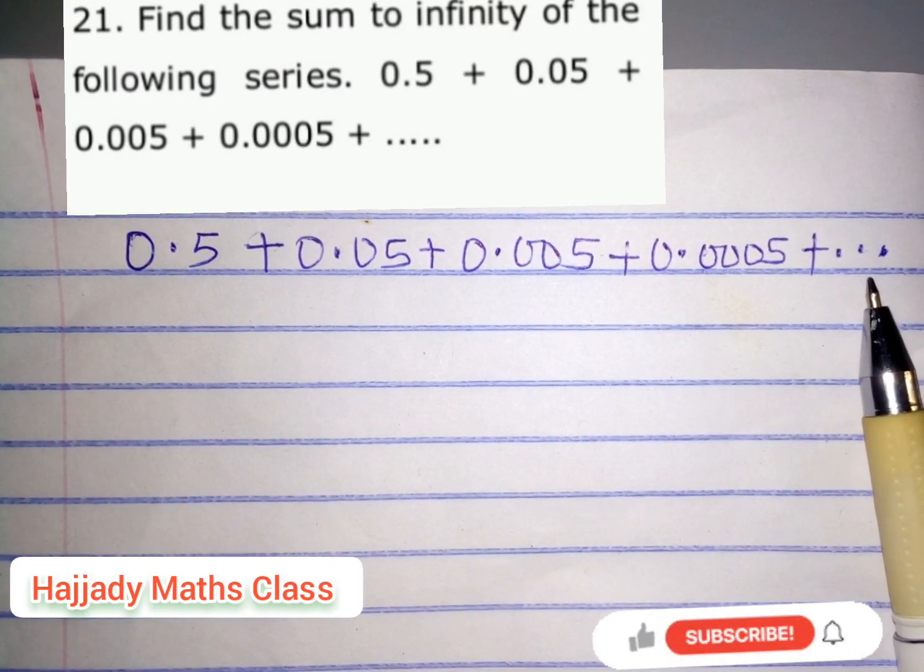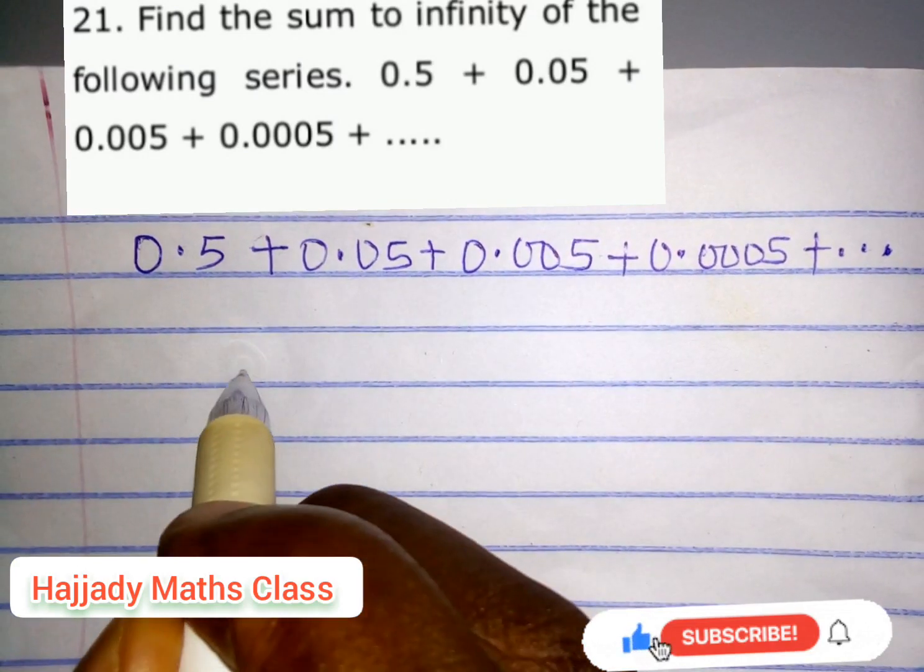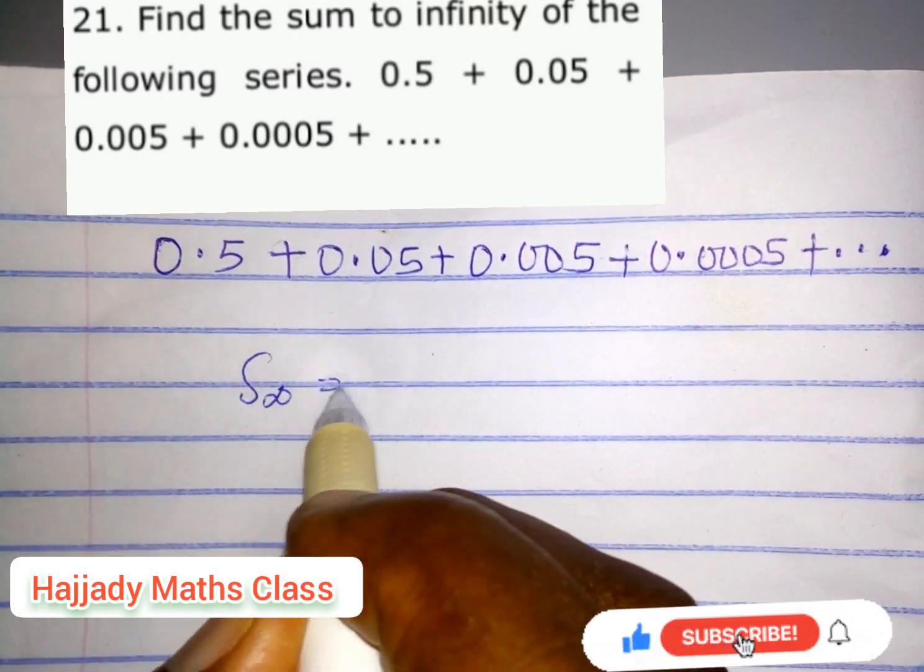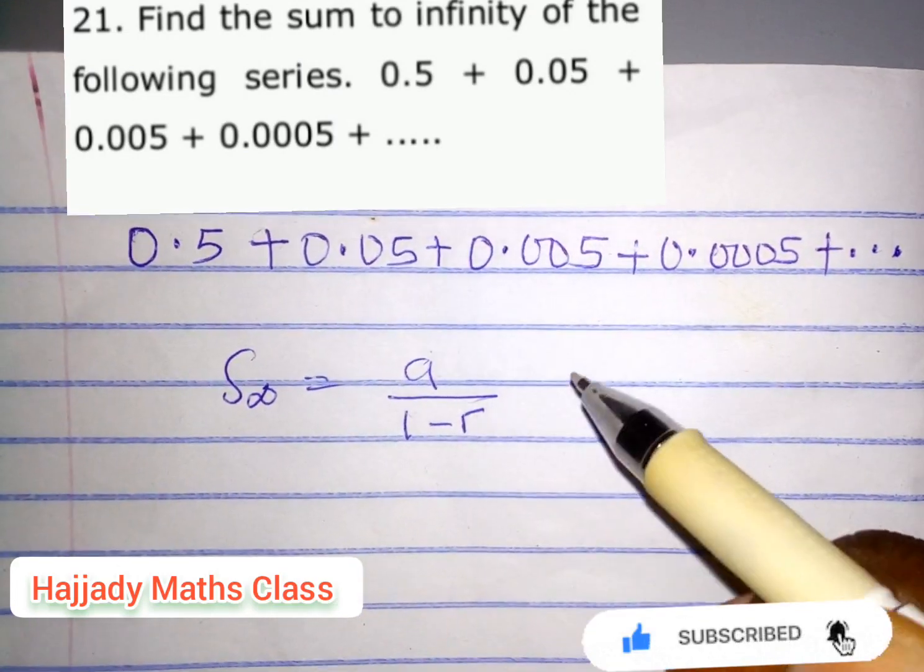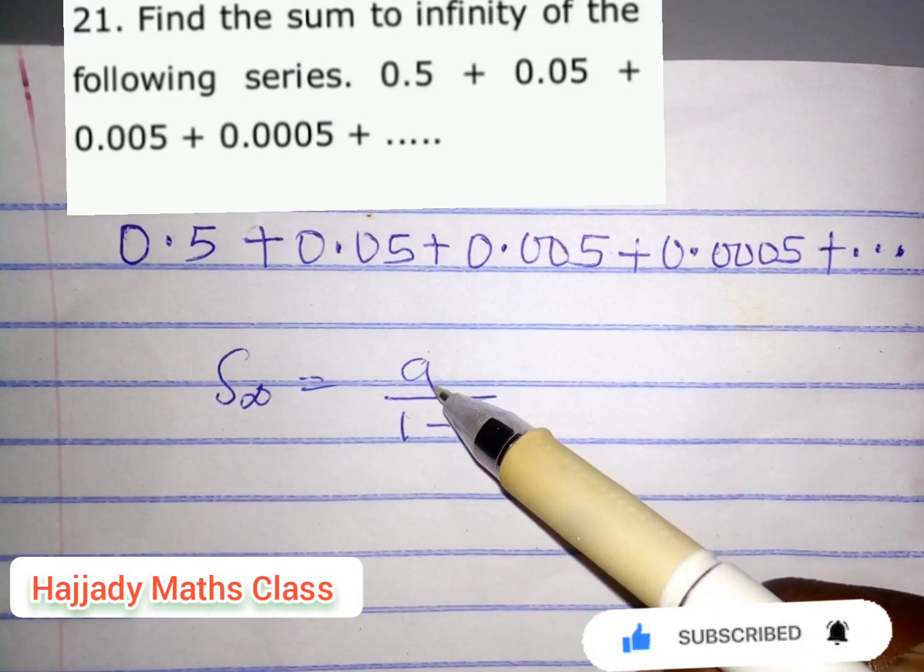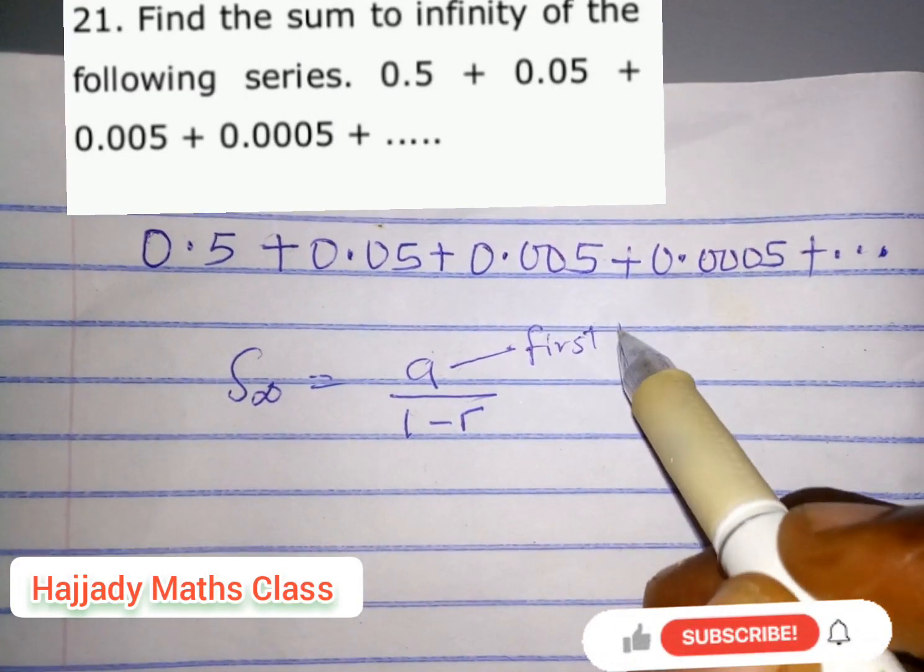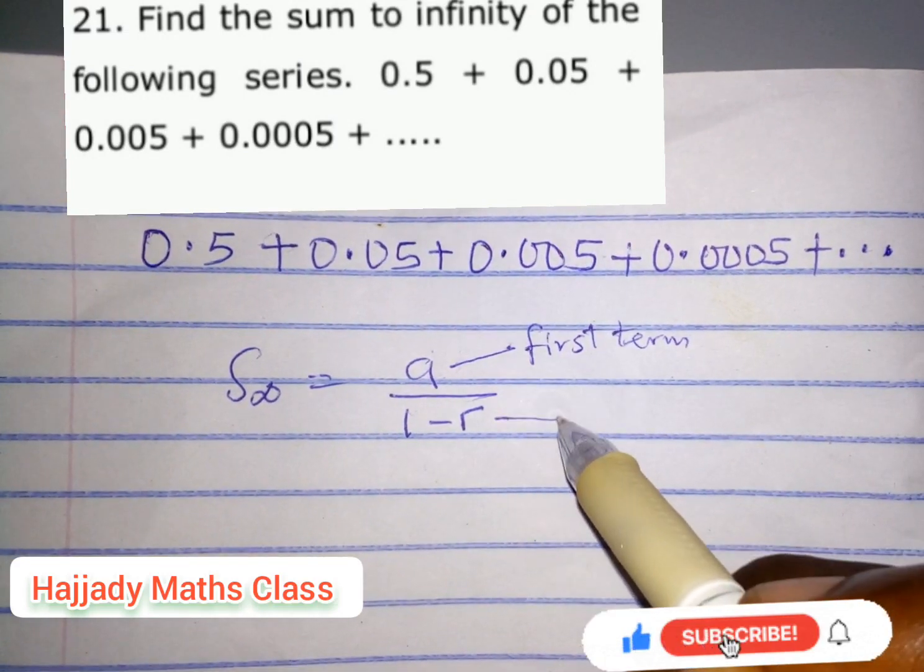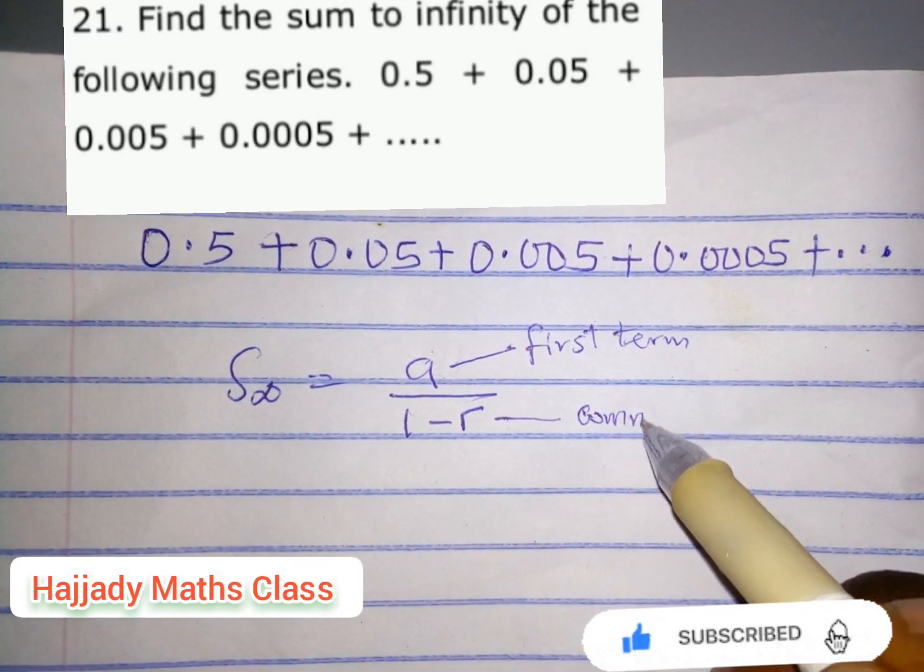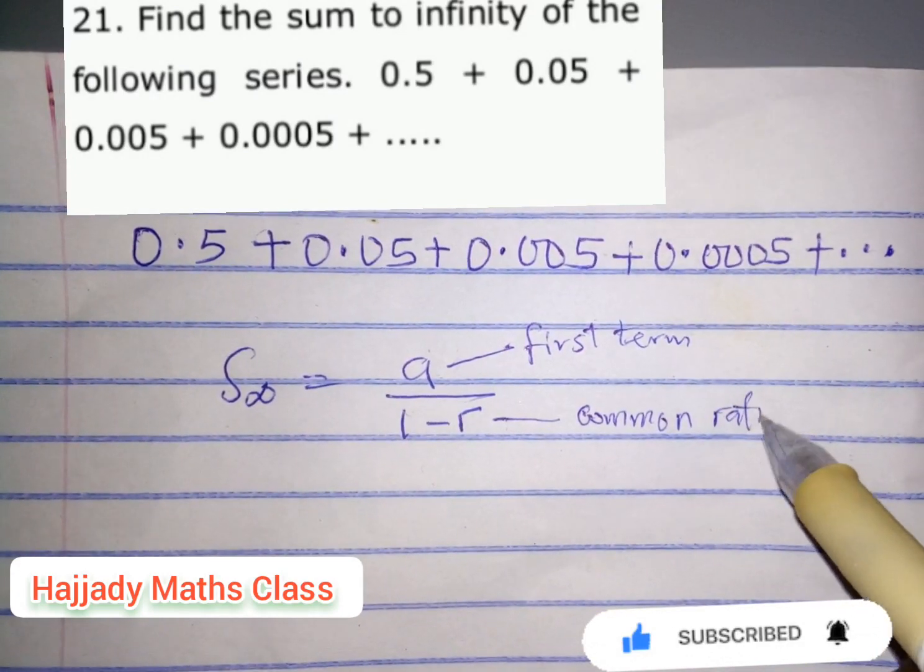Don't let us forget the formula for sum to infinity. The formula is: sum to infinity equals a over 1 minus r. Don't let us forget that a is the first term of the series, while r is the common ratio. Now the first thing we need to do